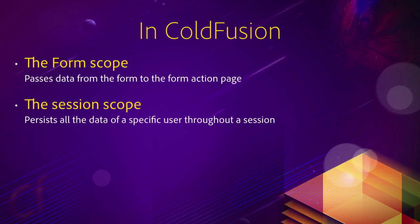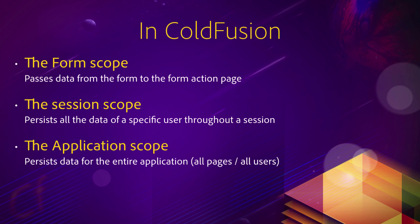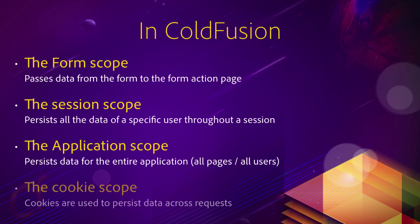You can also use the session scope. The session scope persists all the data of a specific user, so the data you store in the session scope will persist across requests. The same thing with the application scope — it will persist across requests. The difference between the session and the application scope is that the application scope stores data for the whole website regardless of the user making the request, while the session scope stores data specific to one user, such as a shopping cart. We also have the cookies scope. Cookies are used to store data on the browser, on the machine of the visitor, so that data can be persisted across requests.